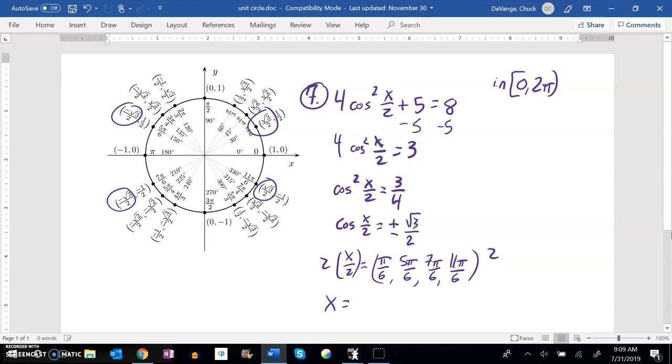Notice if I do this, that'd be 2π over 6, which is π over 3. By multiplying by two, basically I'm halving the denominator. So this would be 5π over 3, this would be 7π over 3, etc.